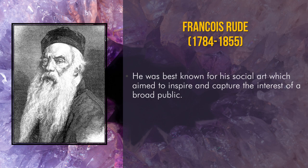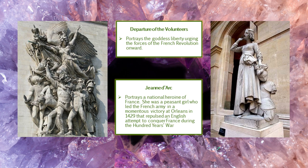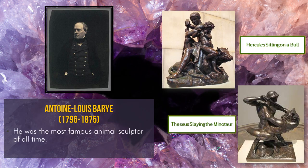The last two popular artists from the Romantic era are François Rude, from 1784 to 1855, best known for his social art which aimed to inspire and capture the interest of the broad public. Some of his famous artworks are The Departure of the Volunteers and Joan of Arc. The Departure of the Volunteers portrays the goddess Liberty urging the forces of the French Revolution onward. Joan of Arc portrays the national heroine of France — a peasant girl who led the French army to a momentous victory at Orléans in 1429, repulsing an English attempt to conquer France during the Hundred Years' War. Lastly, we have Antoine-Louis Barye, the most famous animal sculptor of all time, whose popular artworks include Hercules Sitting on a Bull and Theseus Slaying the Minotaur.